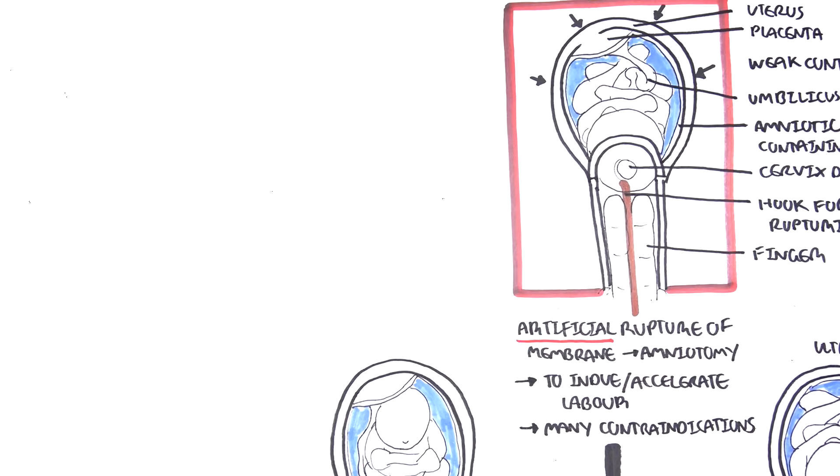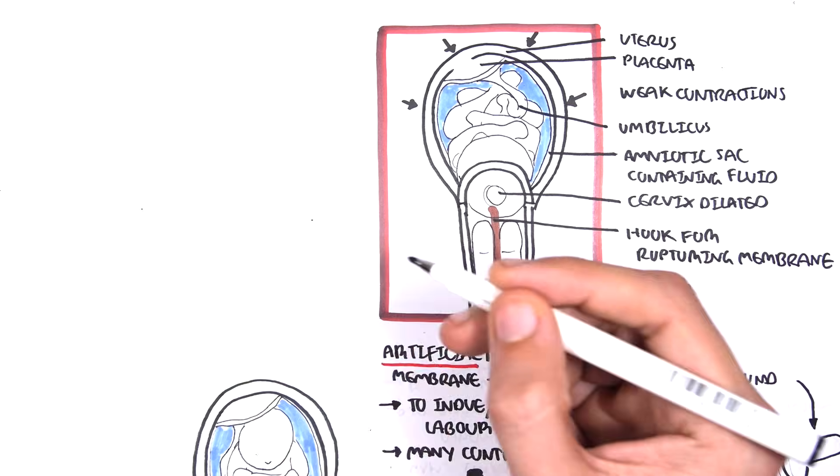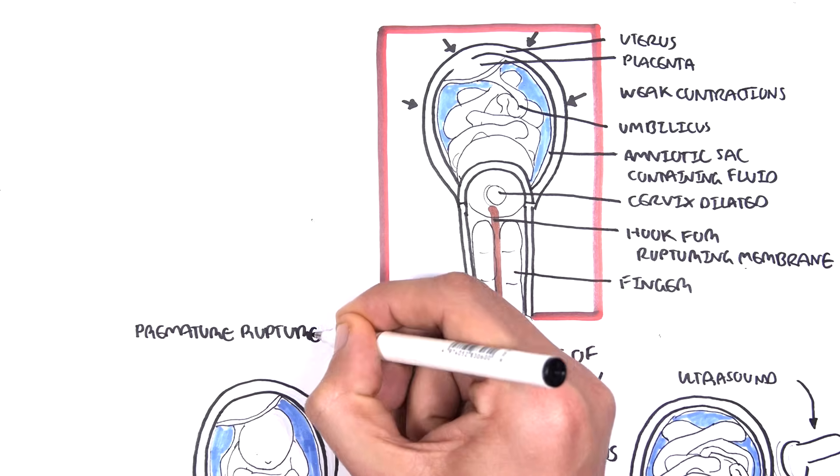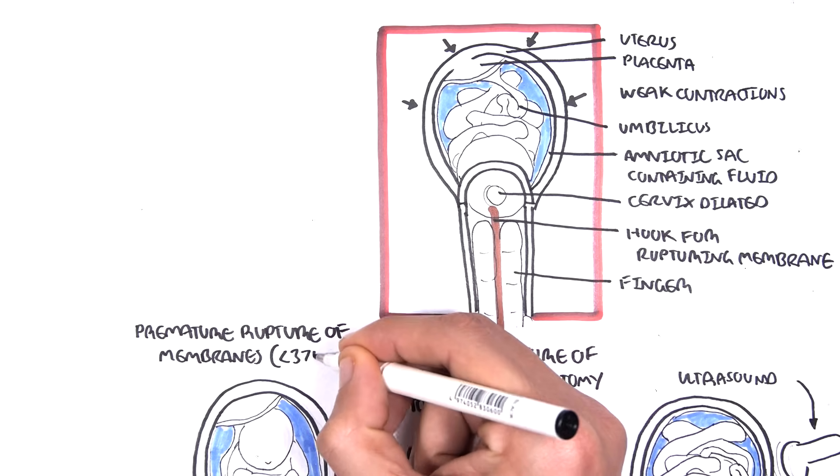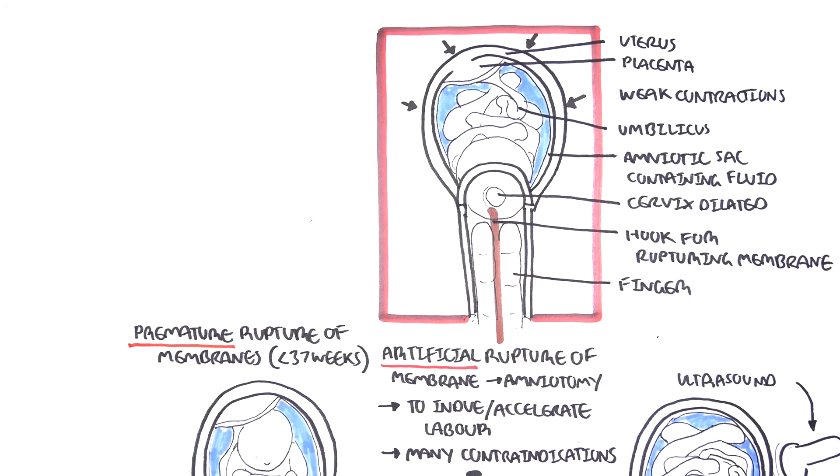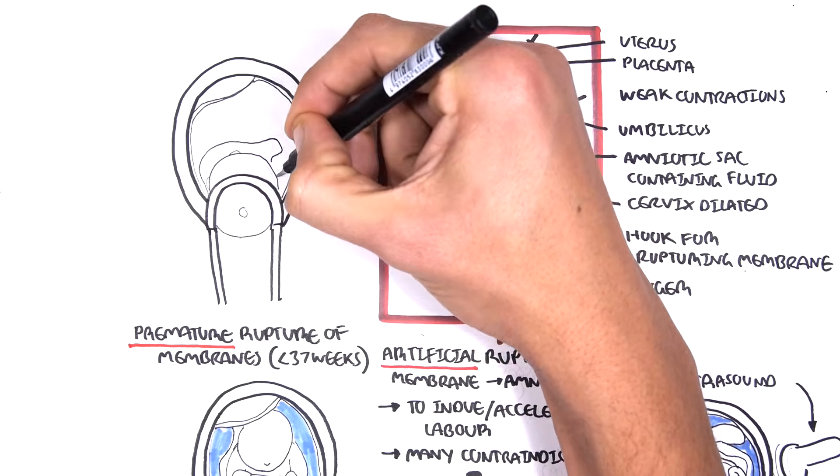Again, just recapping, you have spontaneous rupture of membranes which occurs spontaneously during labor or before. Then you have artificial rupture of membranes which is performed by someone to help induce labor or help accelerate labor. Then there is rupture of membranes but happens before term. So what I mean is before 37 weeks. And this is called premature rupture of membranes. And again, this is rupturing of the membranes, rupturing of the amniotic sac before 37 weeks gestation.